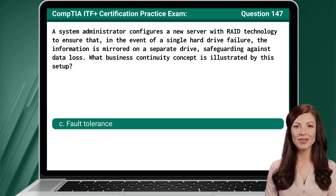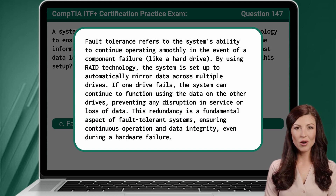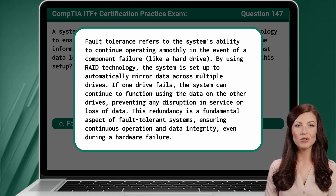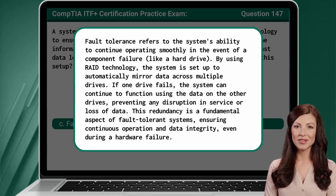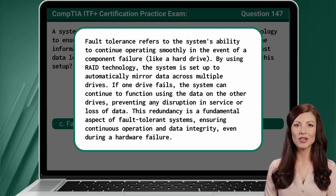The answer is C: Fault Tolerance. Fault Tolerance refers to the system's ability to continue operating smoothly in the event of a component failure, like a hard drive. By using RAID technology, the system is set up to automatically mirror data across multiple drives. If one drive fails, the system can continue to function using the data on the other drives, preventing any disruption in service or loss of data. This redundancy is a fundamental aspect of fault-tolerance systems, ensuring continuous operation and data integrity, even during a hardware failure.